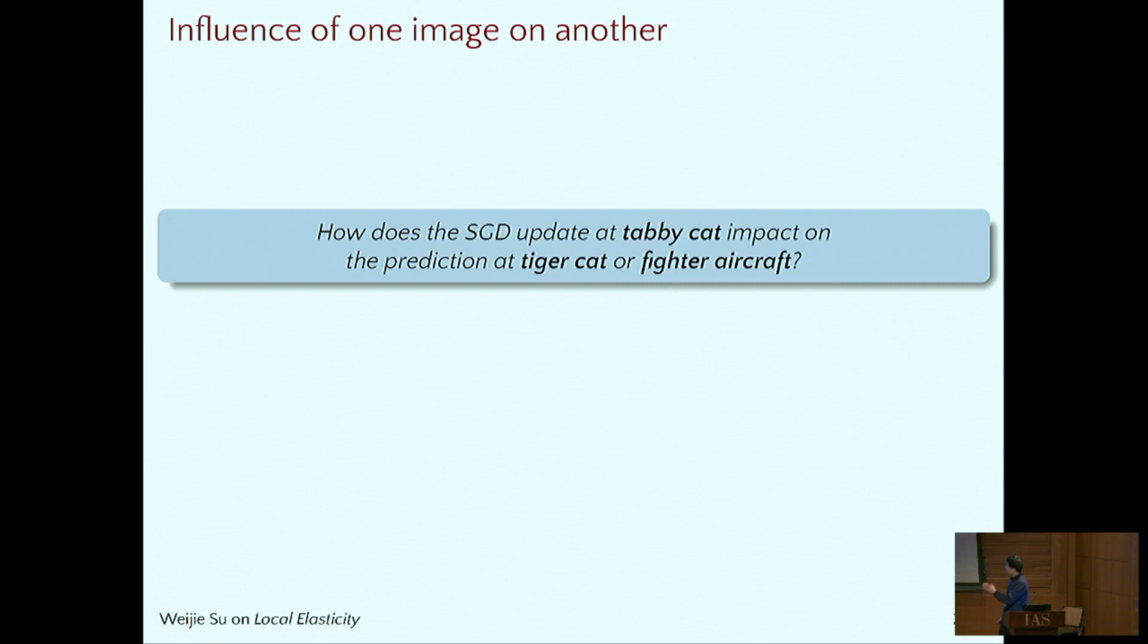Most specifically, imagine that we run SGD on the tabby cat, then the weights will be updated, so it will change the prediction everywhere. Our question is: the prediction change on tiger cat, and the prediction change on fighter aircraft, which one is larger, which one is smaller? Intuitively speaking, probably it will change less on the plane because the plane is far away. This is consistent with our wisdom.